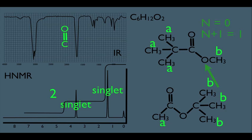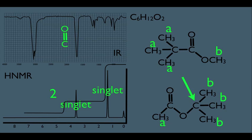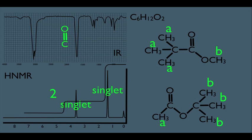Let's do the same analysis for the bottom molecule. For the A hydrogens, the only neighboring carbon has no hydrogens, so n equals zero and the n plus 1 rule says they should be a singlet. For the B-type hydrogens, their only neighbor also has no hydrogens, so the n plus 1 rule would also give a singlet. So notice multiplicity doesn't help us rule anything out here — we need to keep going through the rest of the aspects of HNMR.